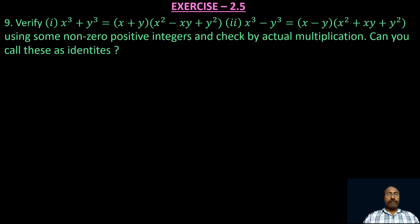The 9th problem says: verify that (1) x³ + y³ = (x + y)(x² - xy + y²) and (2) x³ - y³ = (x - y)(x² + xy + y²), using some non-zero positive integers and check by actual multiplication. Can you call these identities? We have to verify the given two results by taking some non-zero positive integers in place of variables, and then check whether it is true by actual multiplication also.